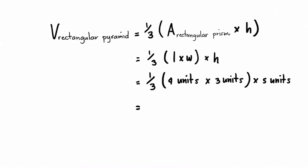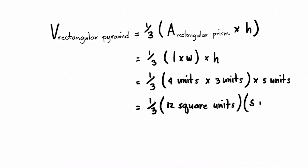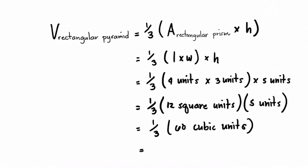Let's try this example. If the base of a rectangular pyramid is 4 units by 3 units, and the height is 5 units, what is the volume? Substituting: one-third times 4 units times 3 units times 5 units equals one-third times 12 square units times 5 units, which equals one-third times 60 cubic units. Therefore, the volume of the rectangular pyramid is 20 cubic units.